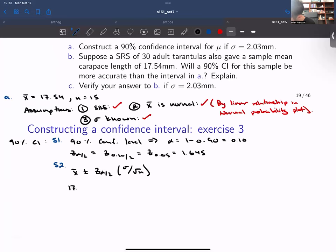This is 17.54 plus or minus 1.645 multiplied by 2.03 over the square root of 15.